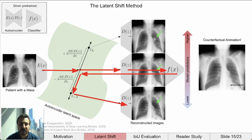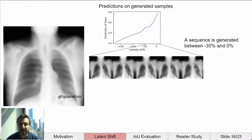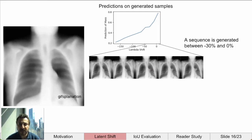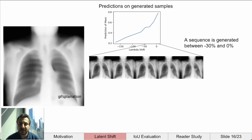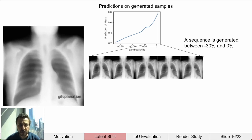When we move in latent space, we can run the classifier on the reconstructed images to see how much the prediction has changed. We found that changing the prediction by negative 30% produces good images. So we run an iterative search along the gradient vector in latent space until we've reduced the prediction by 30%. The classifiers used were calibrated so that 0.5 is the approximate decision boundary, which helps this method work well.